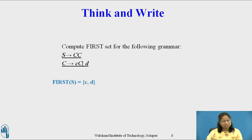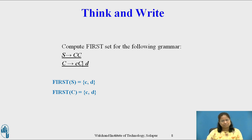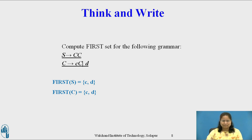To compute First(C), consider the production C derives c C or d. First(C) = First(c C) ∪ First(d). First(c C) = { c } since c is a terminal, and First(d) = { d }. Hence First(C) = { c, d }. As First(C) does not contain epsilon, First(S) = First(first C) = { c, d }.